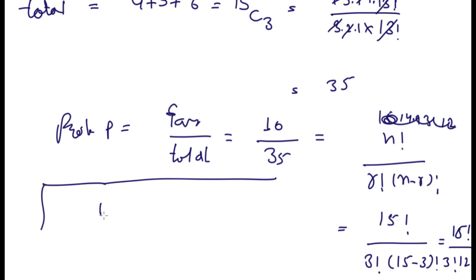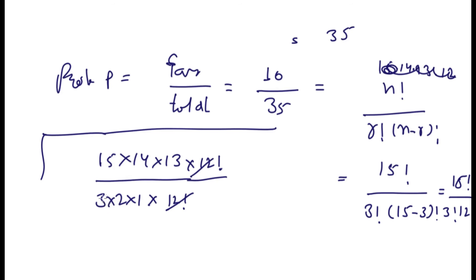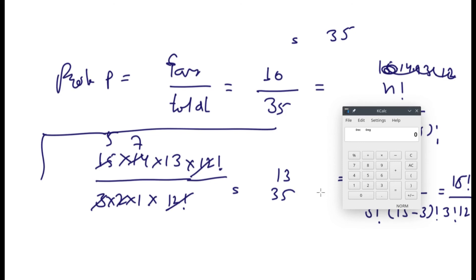The 12 factorials will cut and then we'll get the answer. By solving this, we've already cut by 5 and there's 7, so we have to calculate 13 times 35 using a calculator. So here 35 times 13, it is 455.